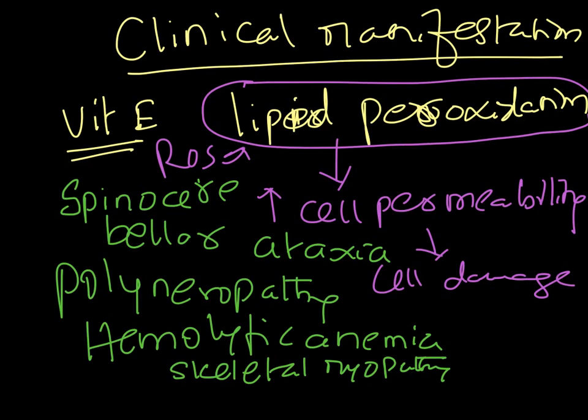Treatment involves supplementing vitamin E. One important precaution: do not be overly aggressive in treating vitamin E deficiency if the patient is on warfarin or dicumarol — blood-thinning medications. Vitamin E potentiates the action of warfarin and dicumarol, increasing their blood-thinning effect, which can lead to hemorrhagic disorders.